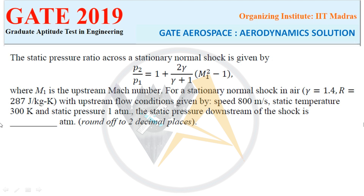Next question: the static pressure ratio across a normal shock is given by P2/P1 = 1 + [2γ/(γ+1)](M1² − 1), where M1 is the upstream Mach number. For a stationary normal shock in air with γ = 1.4 and R = 287 J/(kg·K), with upstream flow conditions of speed 800 m/s, static temperature 300 K, and static pressure 1 atmosphere, find the static pressure downstream of the shock in atmospheres, rounded to two decimal places.